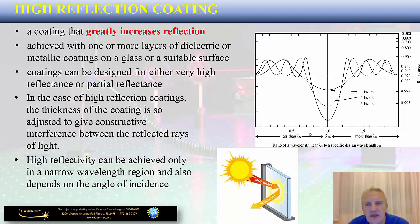High-reflection coatings can be designed for very high or partial reflectance as a function of wavelength. High reflectivity can only be achieved in a narrow wavelength region and also depends on the angle of incidence. As shown on the plot, reflectance at a specific wavelength lambda sub zero increases as more layers are added — with two layers giving about 99% reflectance, and four or five layers approaching almost 100%.